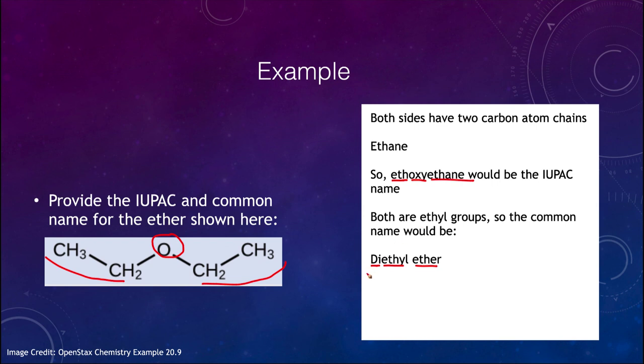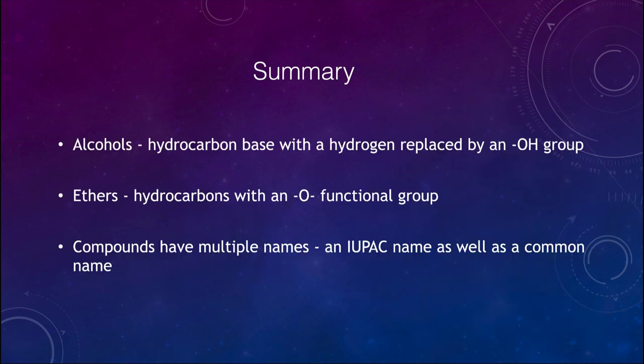So, let's go ahead and finish up with our summary looking at these alcohols and ethers. And what we looked at with these two was that the alcohols were hydrocarbons, with the hydrogen replaced by a hydroxyl, or OH group. An ether is a hydrocarbon, where we have an O group in it. And we also discussed some of the different naming properties. We have the IUPAC names, as well as common names for these different types of organic compounds. So, that concludes this lecture on alcohols and ethers. We'll be back again next time for another topic in physical science. So, until then, have a great day everyone.